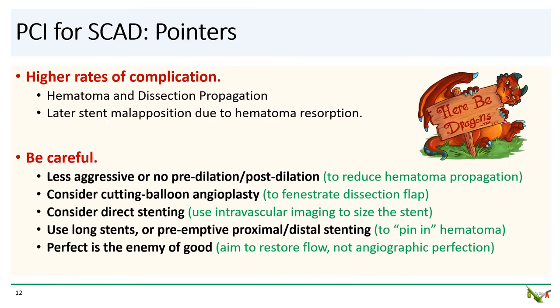PCI for SCAD is very challenging and should come with a warning label, because there is a high rate of both early and late complications. During PCI, angioplasty and stenting can cause a longitudinal extension of the hematoma and propagate the dissection. Additionally, appropriately sizing the stent is challenging because of the intramural hematoma and distortion of the vessel architecture. Stents that were initially well opposed can become malopposed later on as the hematoma resorbs.